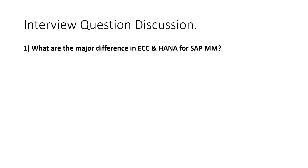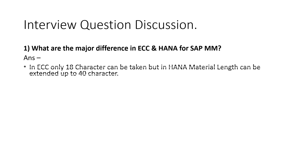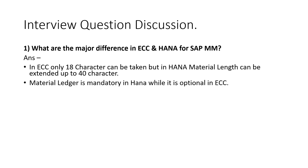First of all, the material number character limit has been increased from 18 to 40 characters. In ECC we had 18 characters, but now in SAP S/4 HANA we can have up to 40 characters for the material number.